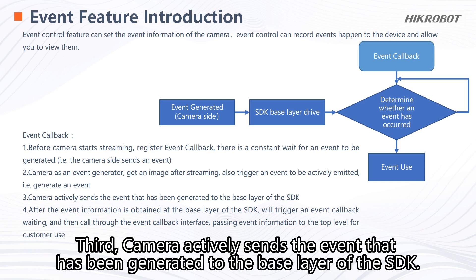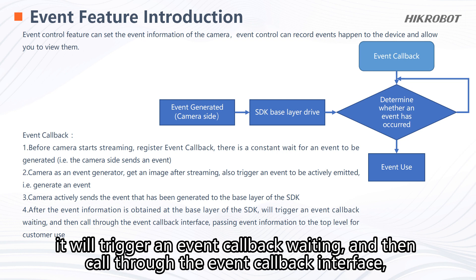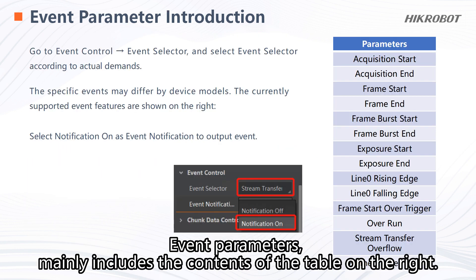Third, the camera actively sends the event that has been generated to the base layer of the SDK. Fourth, after the event information is obtained at the base layer of the SDK, it will trigger an event callback waiting, and then call through the event callback interface, passing event information to the top level for customer use.